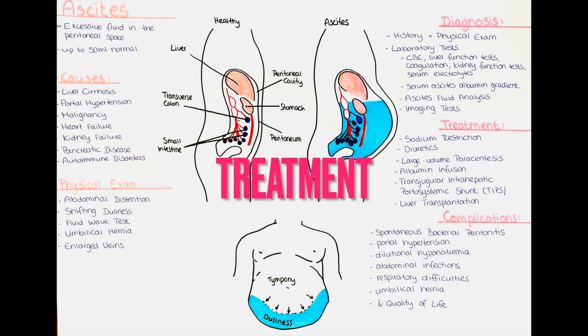How can we treat ascites? The primary goal of ascites treatment is to alleviate symptoms, reduce fluid accumulation, to address the underlying cause, and to prevent complications. Restricting dietary sodium intake is an essential component of ascites management. Lowering sodium intake helps to reduce fluid retention and can be effective in mild cases of ascites.